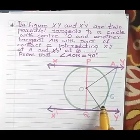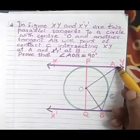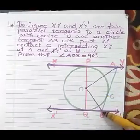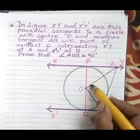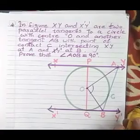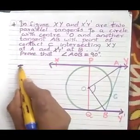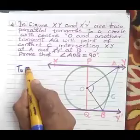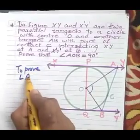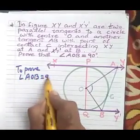Now what we need to prove? Angle AOB. See in the figure the points A, O, B. So this angle — it is 90 degrees that we are going to prove. To prove: angle AOB equal to 90 degrees.